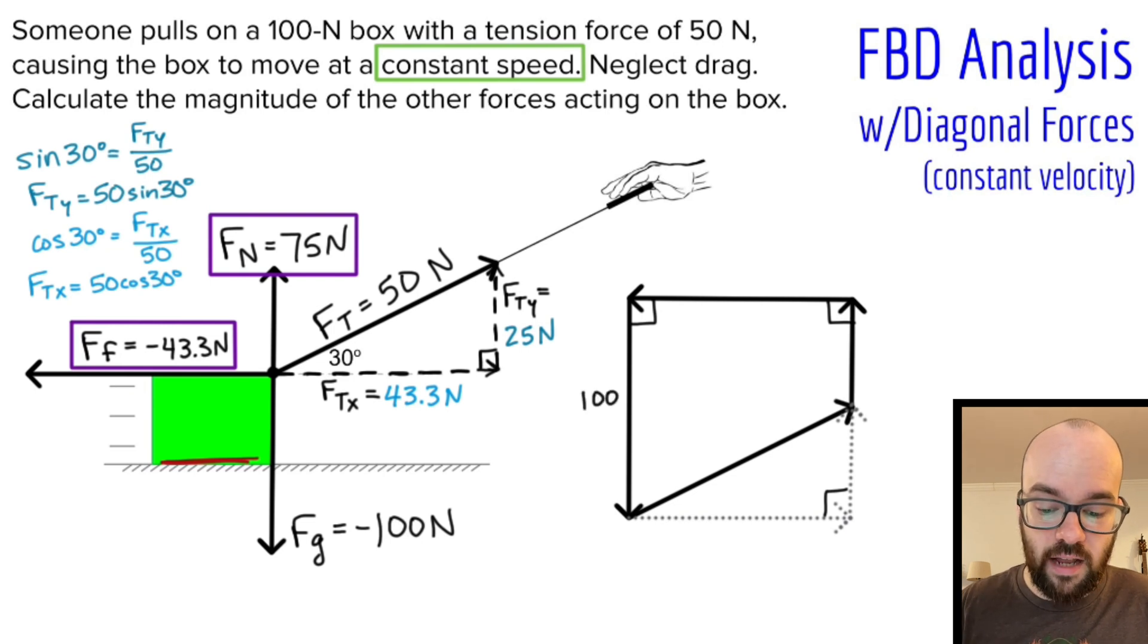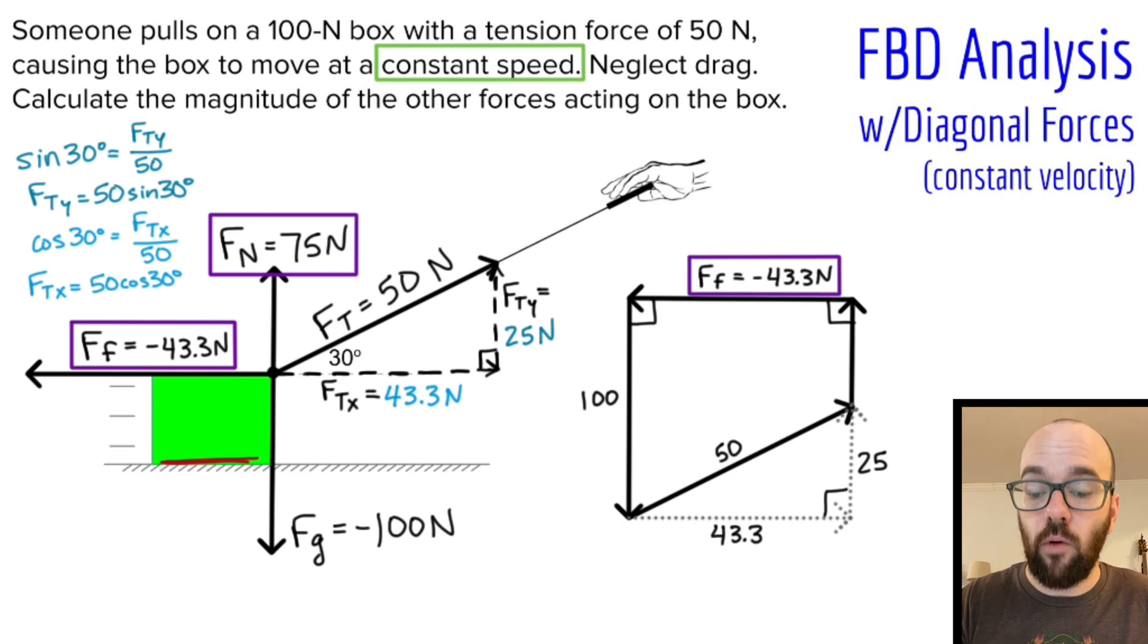I can go ahead and start labeling the forces that I know. I know that gravity is 100 newtons downward. I know that tension force is 50. We already resolved that into its components. So 43.3 and 25. And now I can just use geometry to figure out the unknown parts of this. I've got this horizontal friction force here, which has to be negative 43.3 because that side has to be the same as this side of the rectangle. And what would that normal force upward be? Well, the two sides of the rectangle have to be the same length. So if this one's 100, this is 25, then this must be 75 to get a total of 100 here. So my normal force is 75 newtons upward.